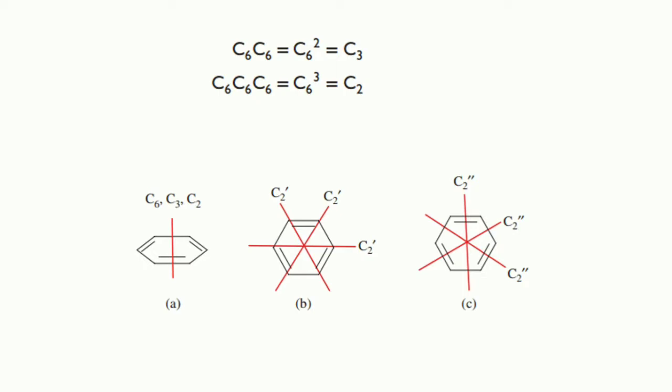Two C6 rotations performed in succession are identical to one C3 rotation about the same axis. Similarly, three C6 rotations are equivalent to one C2 rotation. The two C6 rotations performed in succession are identical to one C3 rotation about the same axis.